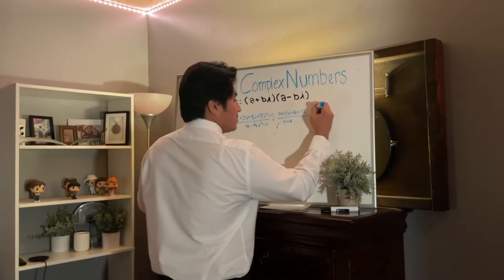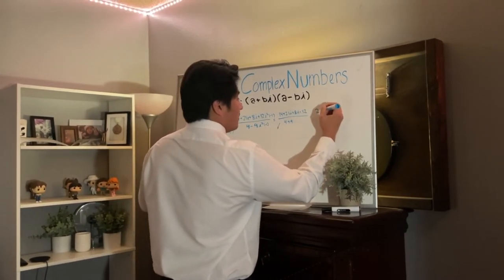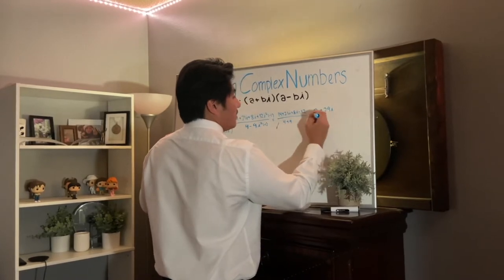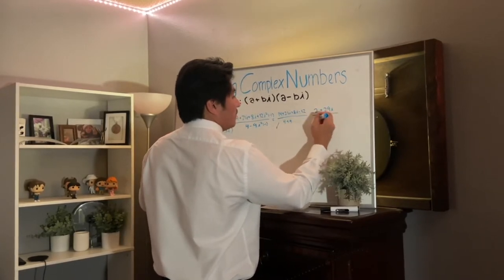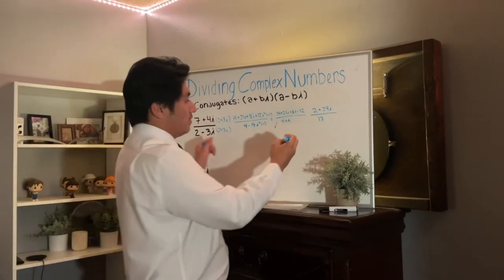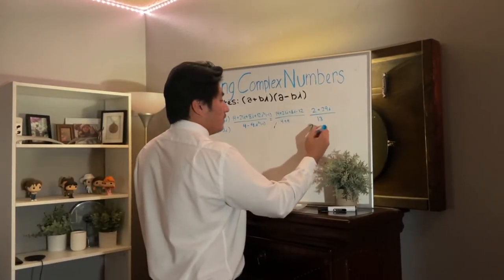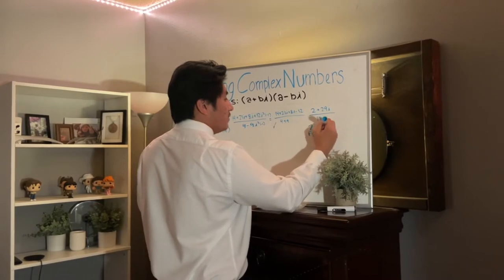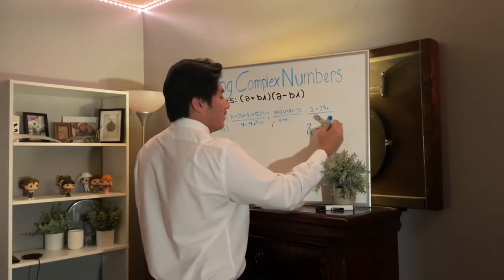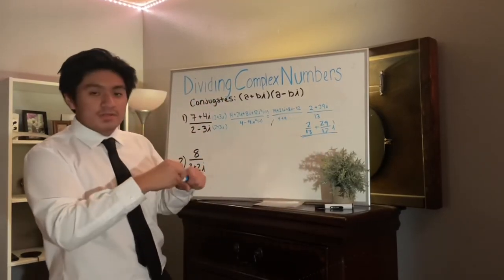So 14 minus 12 is going to be 2, and then 21i plus 8i is going to equal 29i, all over 13. We're going to break this apart: it's going to be 2 over 13 plus 29 over 13 i, and that's the final answer for the first equation.